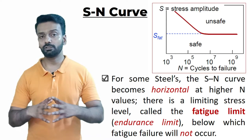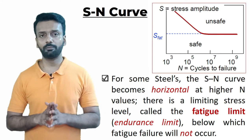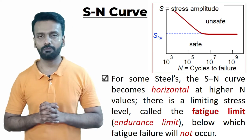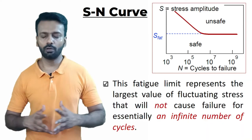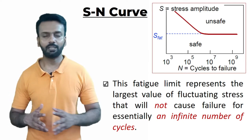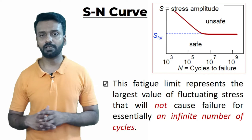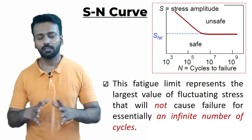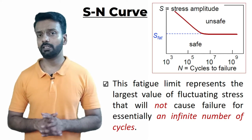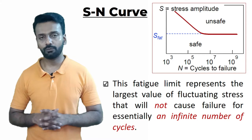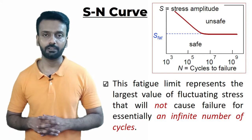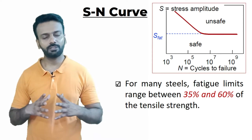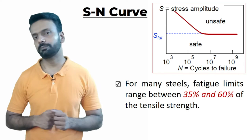For each material, the S-N curve is defined, and we know after how many cycles the material is bound to fail. When the limit of cycles is approaching, we can replace the component so it does not fail in fatigue. This red line shown in the image is called the fatigue limit or endurance limit. When you operate the material below that stress level, the material will not fail in fatigue — it will go on for an infinite number of cycles. For many steels, the fatigue limit is approximately 35 to 60% of the tensile strength.